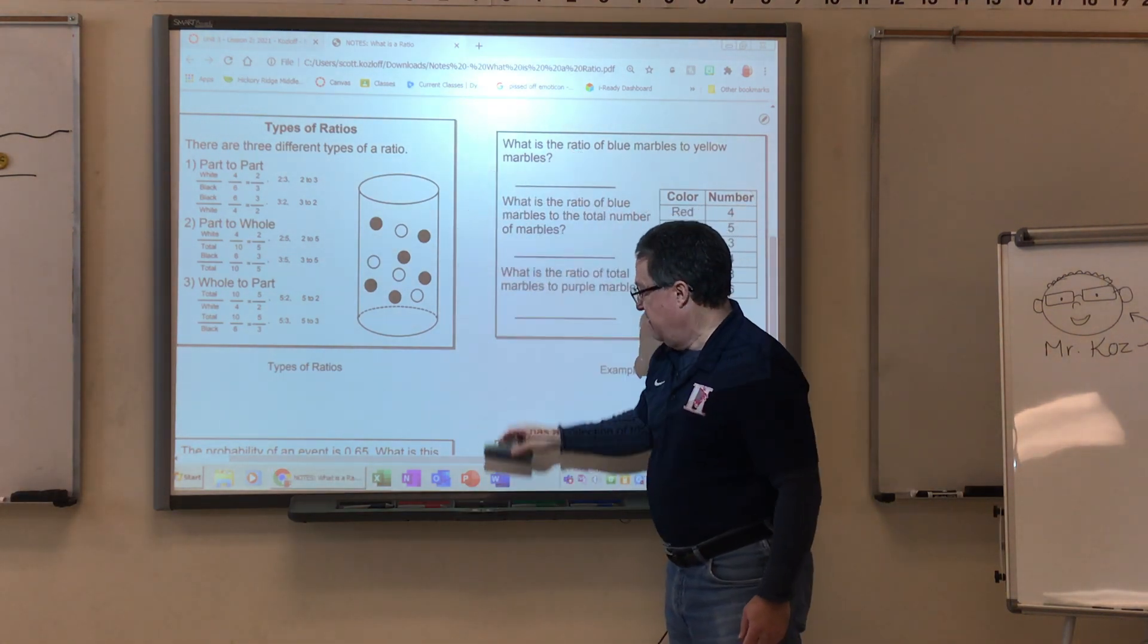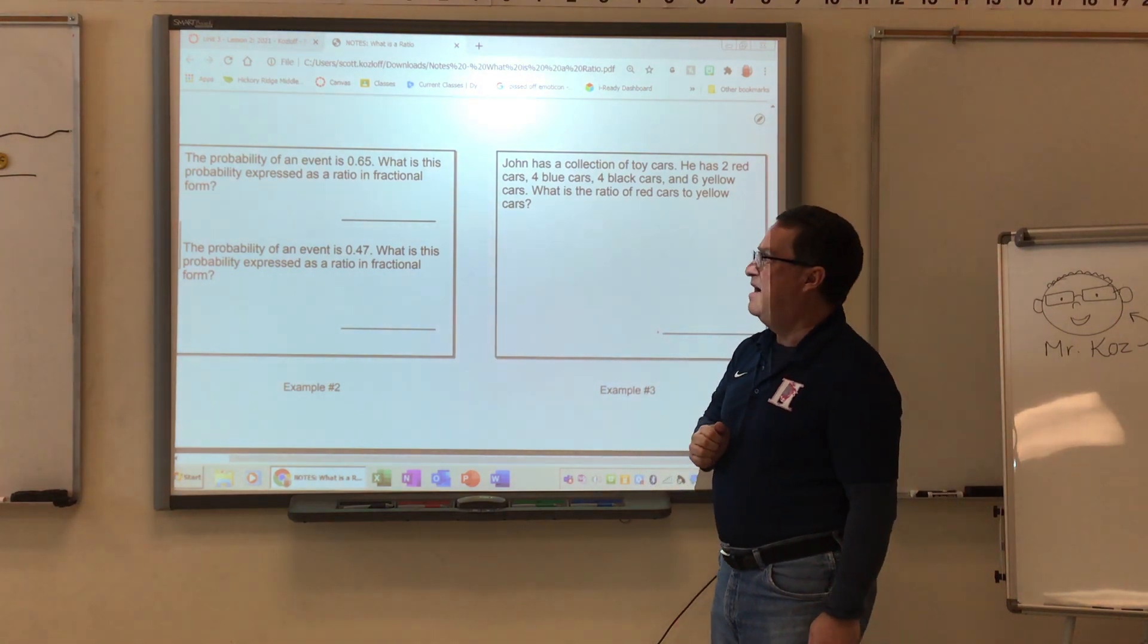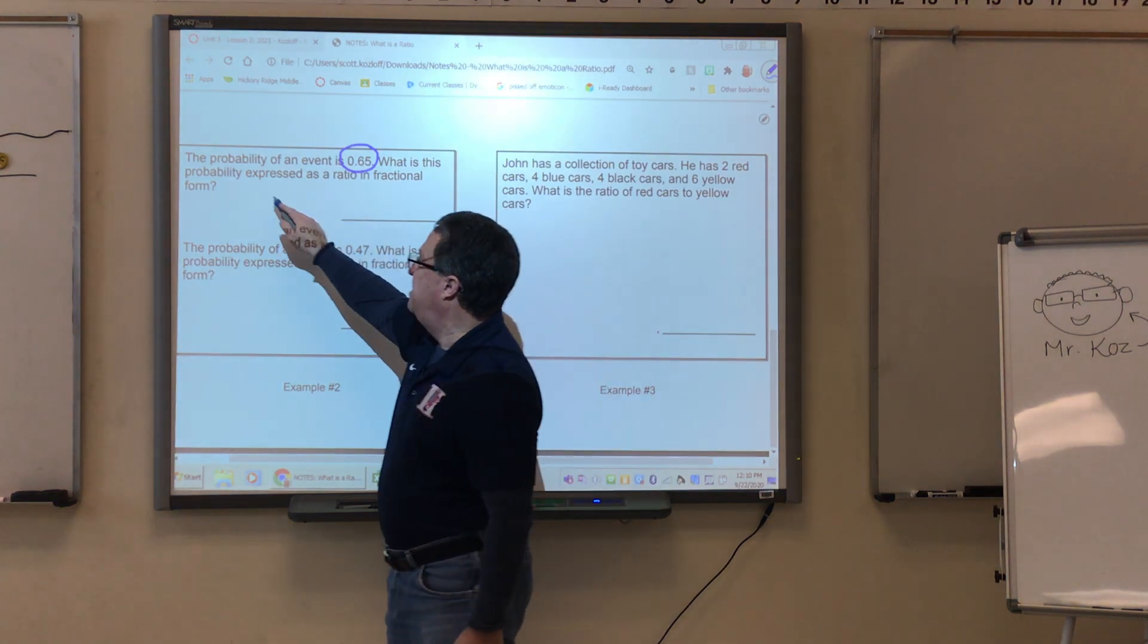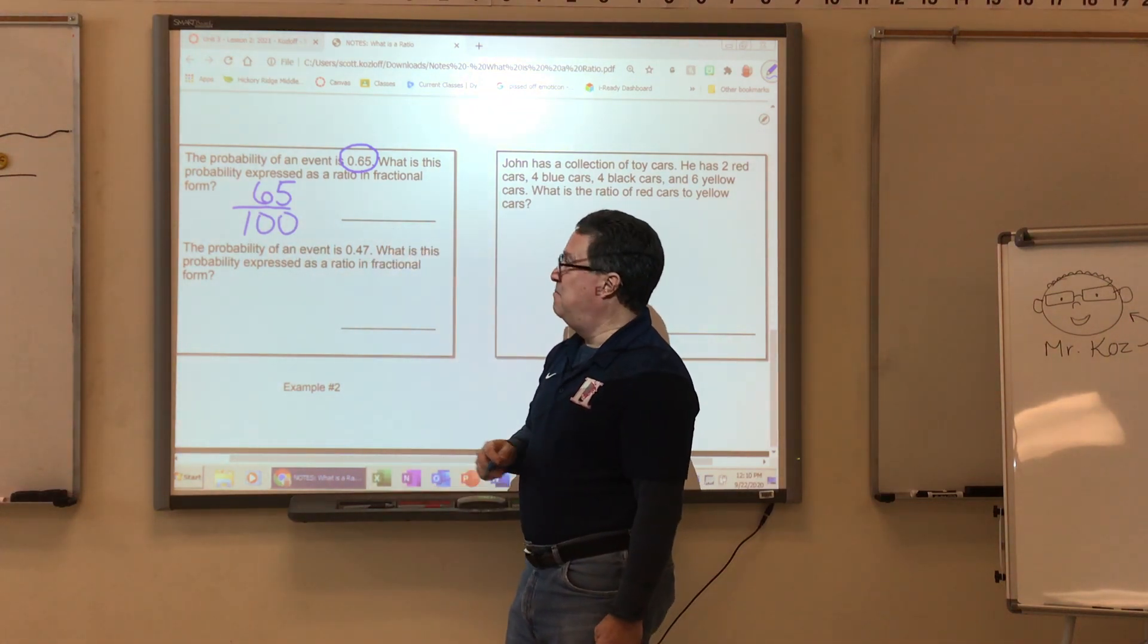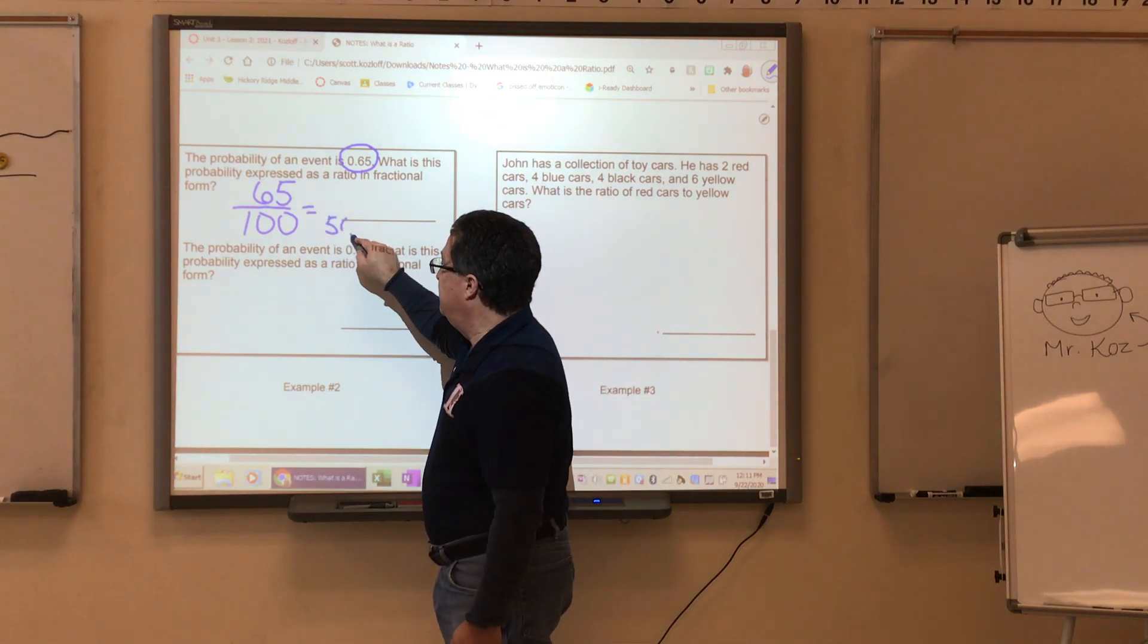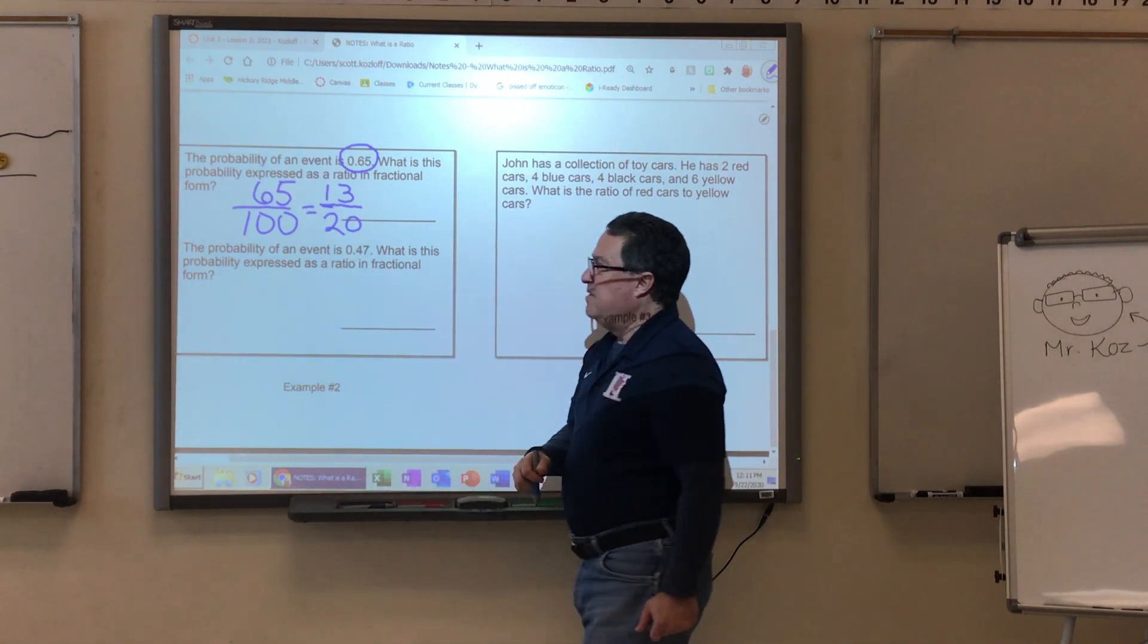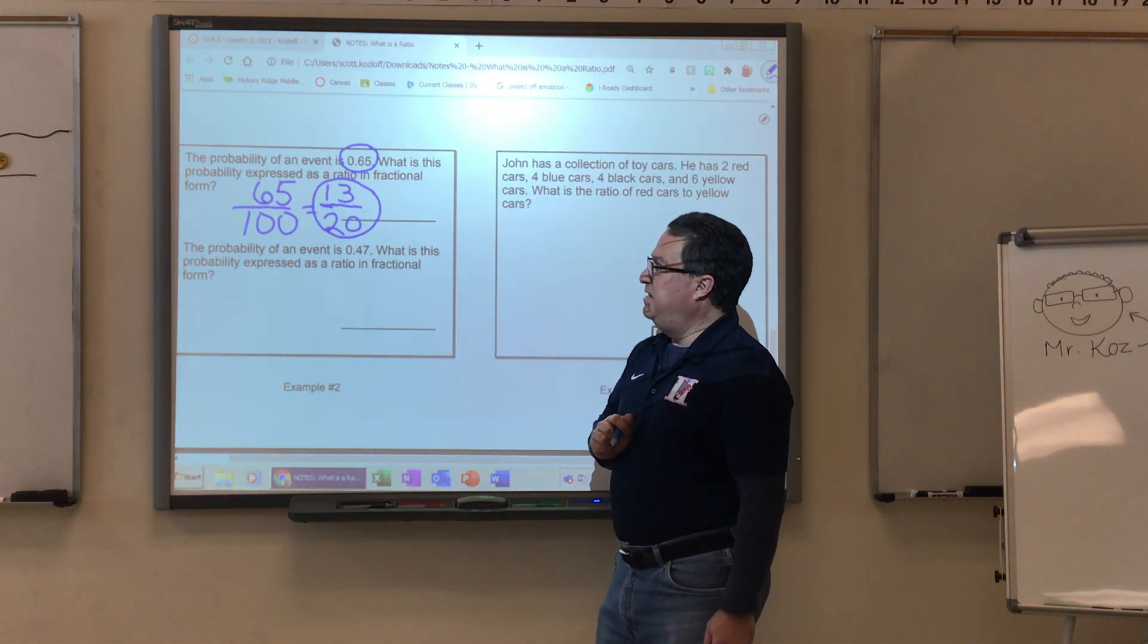Last but not least, if we go down to the last few examples, the probability of an event is 0.65. What is the probability expressed as a ratio in fractional form? So now you have a decimal that we need to change into a fraction. 0.65 is 65 one hundredths. You should have learned that in fifth grade. I hope you remember. I need to simplify that now. They are both divisible by 5, which takes this down to 13 over 20. And I do not believe there is anything else that I can do. So there is your answer for the probability expressed as a ratio.